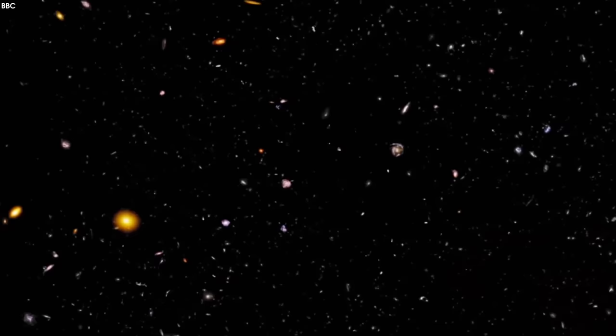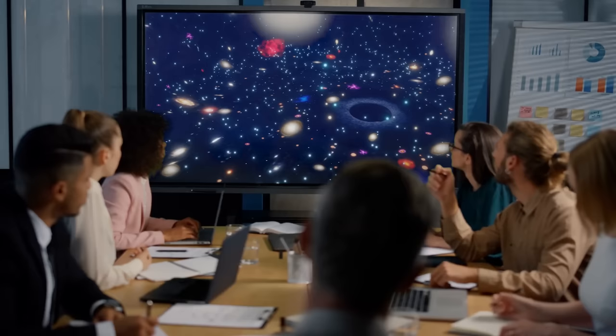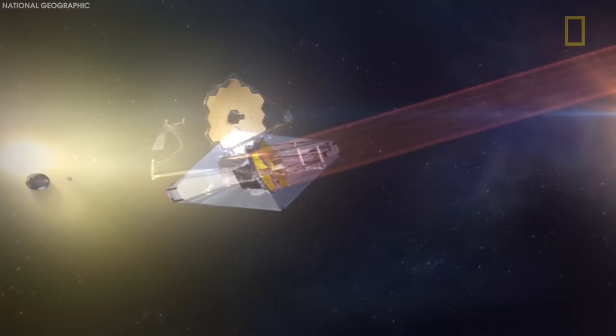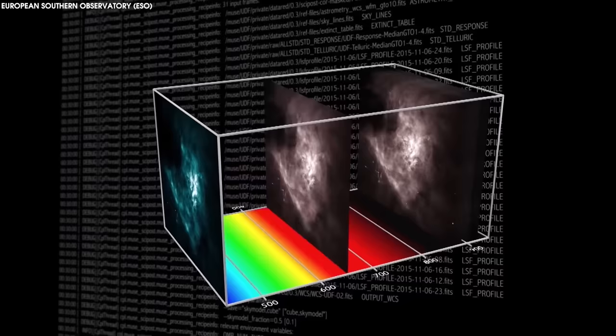Over the summer, JADES surveyed a well-studied patch of southern sky, a portion of the iconic Hubble Ultra Deep Field for primordial galaxies. The collaboration's galaxy hunters first sifted through the 100,000 galaxies in an image taken by Webb's near-infrared camera. This instrument can measure estimated redshifts based on a galaxy's light as seen through different filters.